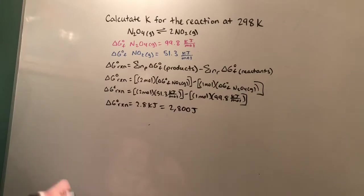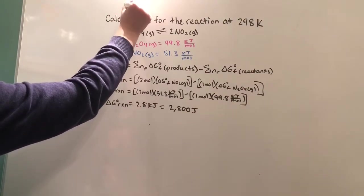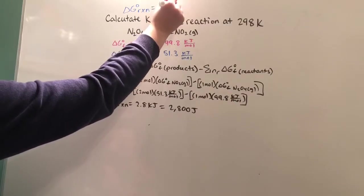Now we're going to use this ΔG to find K. So we found that our ΔG reaction equals 2,800 joules.